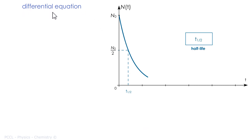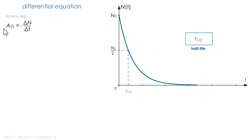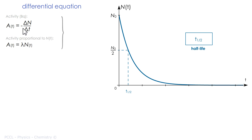You have to be able to establish it. I'm going to offer you something quite simple, which is to write the activity in two different ways. First by giving its definition: it is the number of disintegrations per unit of time. Don't forget the minus sign here. You can also write that this activity is proportional to the number of nucleides.